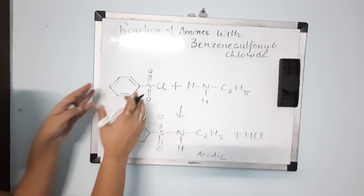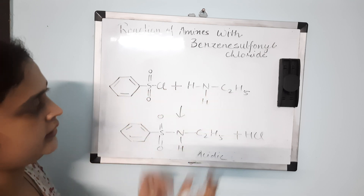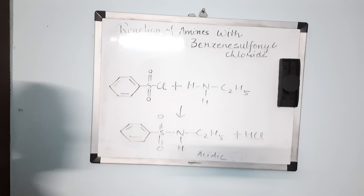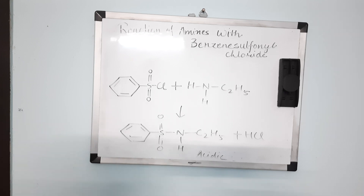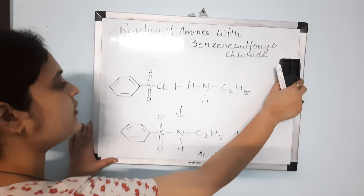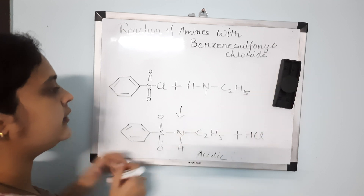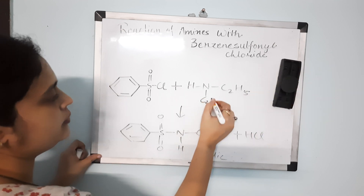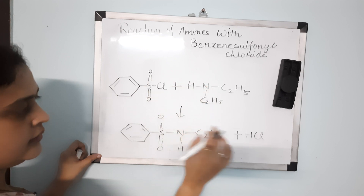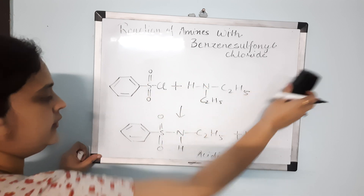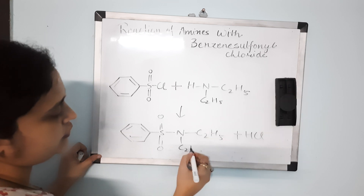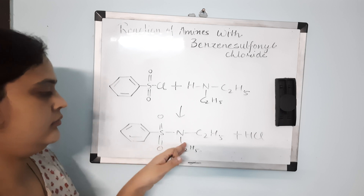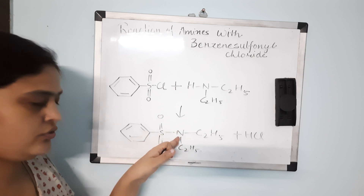This is how benzene sulfonyl chloride reacts with a primary amine. Now let us see how it reacts with a secondary amine. With a secondary amine — for example, one that has two C2H5 groups — HCl will be removed upon reaction.